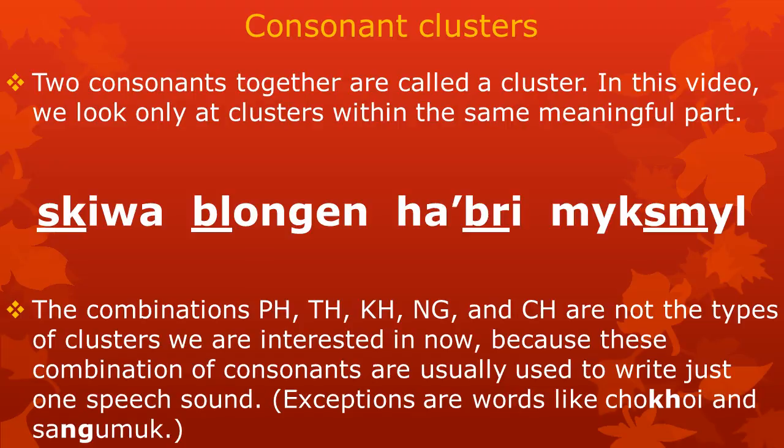The consonant clusters we are interested in in this video are two consonants together in the same meaningful part. For example, the cluster SK in the word SKIWA, the cluster BL in the word BLONGEN, the cluster BR in the word HABRI, and the cluster SM in the word MKSMEL.